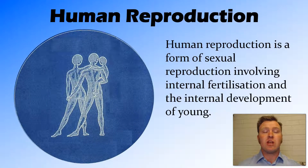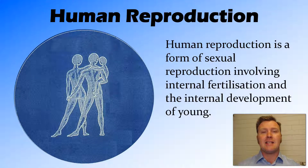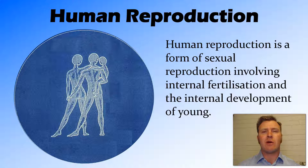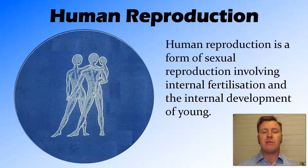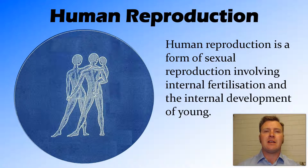So firstly in general, human reproduction — the way that humans reproduce or make more offspring — is a form of sexual reproduction. That is reproduction where there are two parents, a male and a female. This is different to bacteria that reproduce asexually, for example. And this form of sexual reproduction has internal fertilization, so fertilization occurs inside the female, and internal development, so what we call the fetus continues to develop until the time of birth internally in the mother.